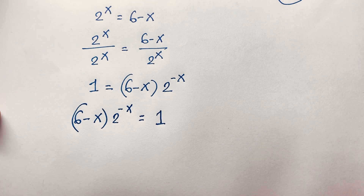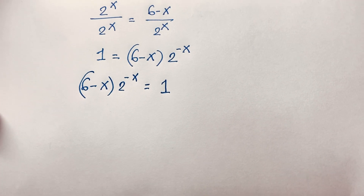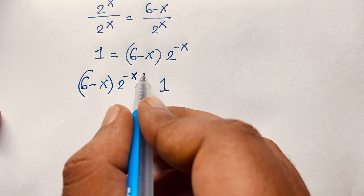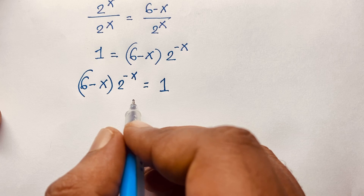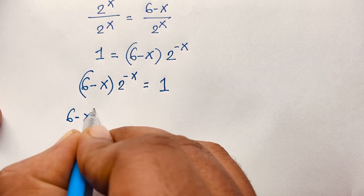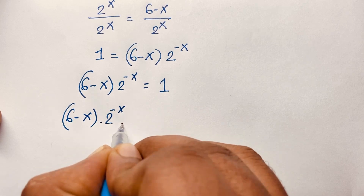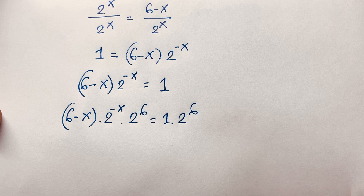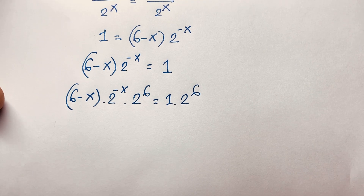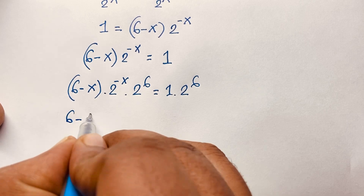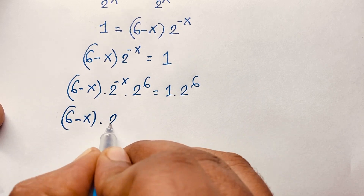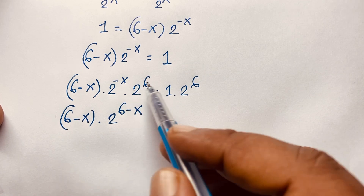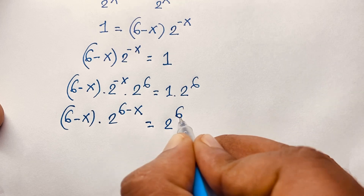Our target is to use the Lambert W function. We need the exponent to be 6. So I multiply both sides by 2 to the power 6. It will be (6 minus x) times 2 to the power negative x times 2 to the power 6 is equal to 1 times 2 to the power 6. Using the exponential law and adding exponents, this becomes (6 minus x) times 2 to the power (6 minus x) is equal to 2 to the power 6.